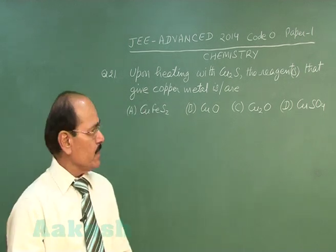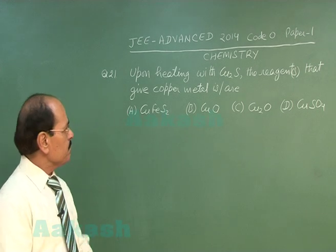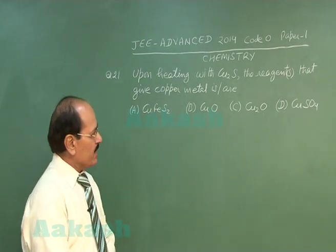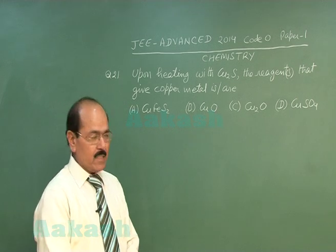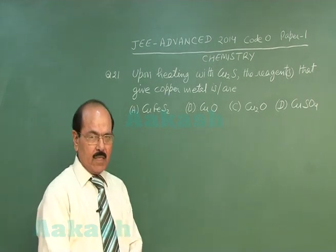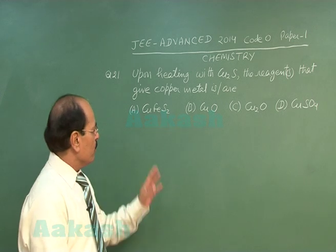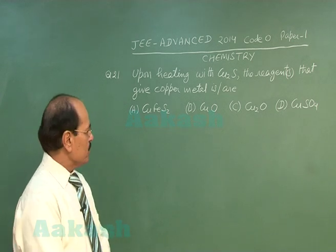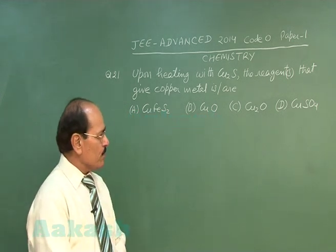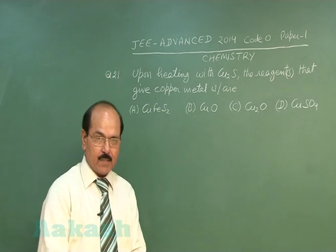Question number 21 says: upon heating with cuprous sulphide, the reagents that give copper metal is or are? Four options are given: CuFeS₂, CuO, Cu₂O, and copper sulphate (CuSO₄).